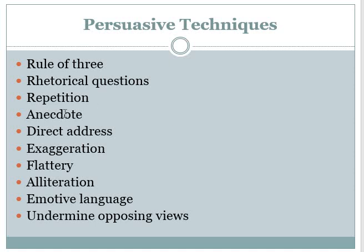Then there is anecdote, which means you are supposed to share any experience from your past — any personal experience related to that topic. This is called anecdote. Then direct address, which means you are addressing the person whom you are writing the letter to. Direct address means you are using his name or using 'you'. For example, I am addressing you people as you are sitting in front of me — that is the technique of direct address.